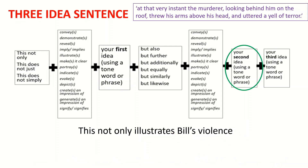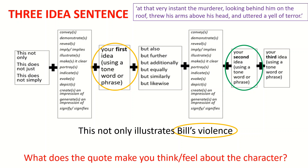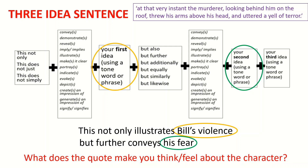Now I need my second idea. To recap, I have my first idea, which is Bill's violence, and to help me come up with a second idea, I'm going to ask myself: what does the quote make you think or feel about the character? Looking at the quote, it makes me think that Bill is scared because he yells in terror. That is going to be my second idea, and by using the flowchart I have written: 'but further conveys his fear.' The quote has made me think about Bill's fear — that is my second idea.